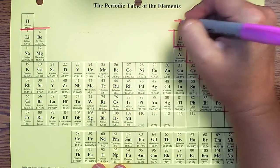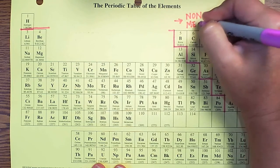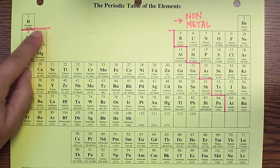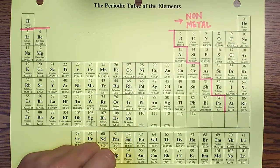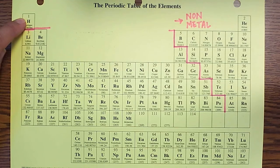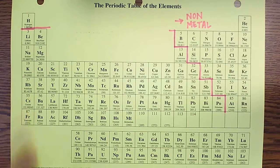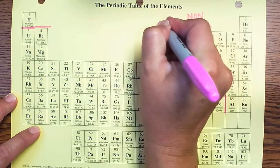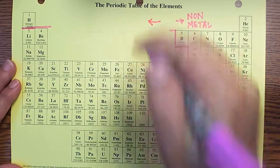That stair step is the division between metals and non-metals. Anything to the right of this line is called a non-metal. We put the stair step over here because hydrogen is included in the category of non-metals. However, hydrogen is placed on the left because it has one valence electron, just like the rest of that group — but in reality, its chemical properties are similar to non-metals. All the other elements to the left are metals.